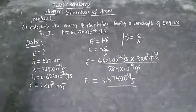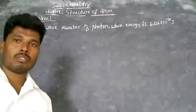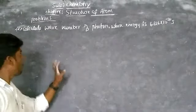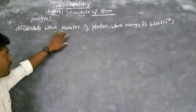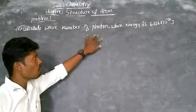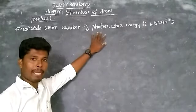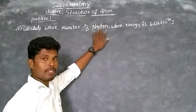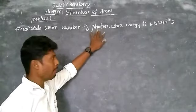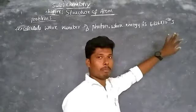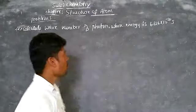Similarly, this is the second problem: calculate the wave number of a photon — not a proton, a photon. A photon is nothing but a small packet of energy that is emitted or absorbed from the metal, whose energy is given as 6.66 × 10⁻²⁰ joules.